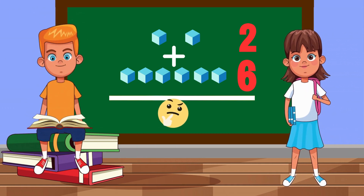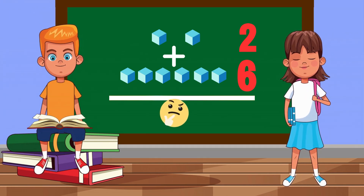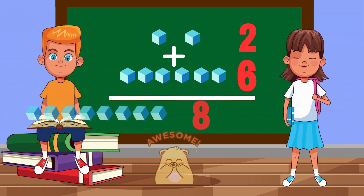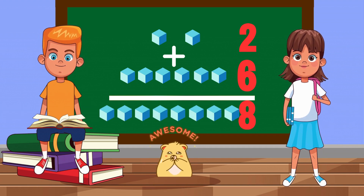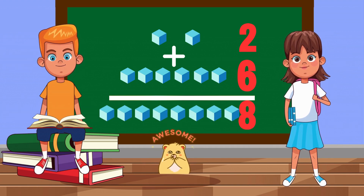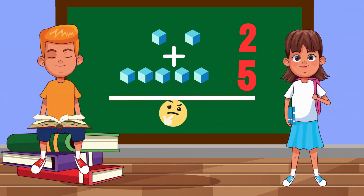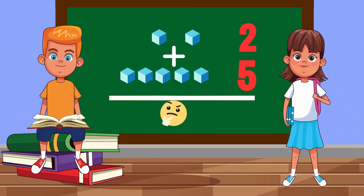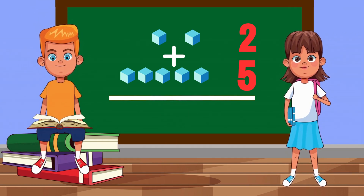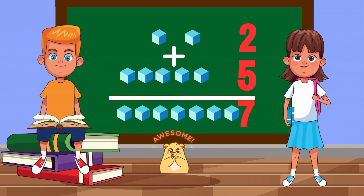2 cubes plus 6 cubes equals 8 cubes. 2 cubes plus 5 cubes equals 7 cubes.